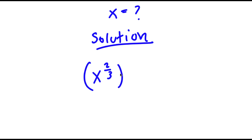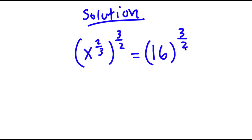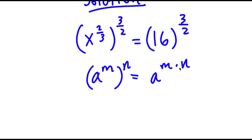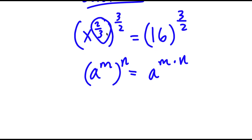I'm going to take the power of 3/2 on both sides. The reason I did this is because if I have something in the form a to the power of m, to the power of n, this equals a to the power of m times n. We want a value that when multiplied by 2/3 equals 1, since x is x to the power of 1. So we multiply by 3/2 — the reciprocal of 2/3 — which makes the product 1.